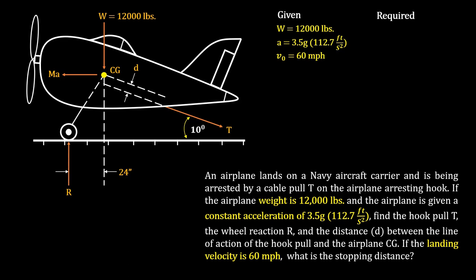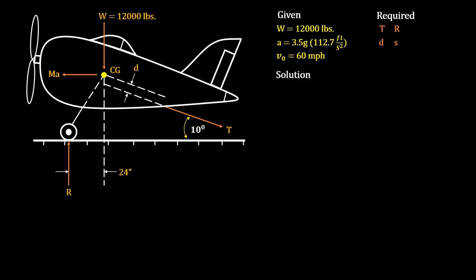Now let's see what we are required to solve. We have our hook pull T, our wheel reaction R, the distance between the line of action of the hook pull and the airplane's center of gravity, and finally we need to find our stopping distance. With the given and required organized, let's proceed with our solution.